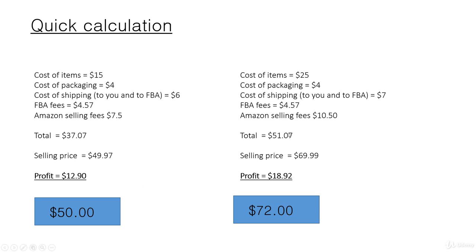Here's a higher-end, higher-value package with a selling price of $69.99. The original calculation would have given us a $72 selling price, but we brought it down to $69.99. So in the customer's mind, it is now a $60 product instead of a $70 product. We're still getting a profit of $18.92 — so nearly $19 on this bundle.